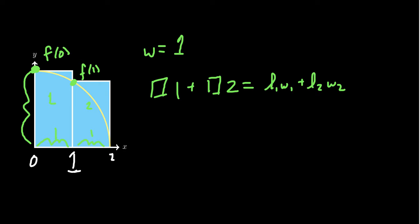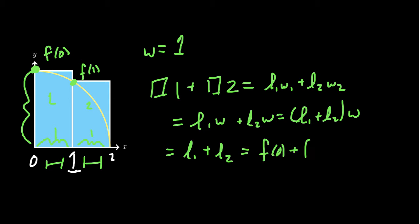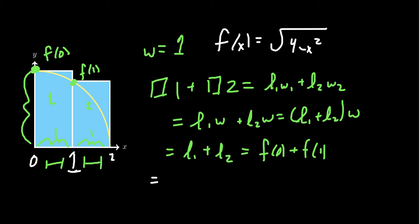Since we chose evenly spaced points, both widths are the same value w. Factoring that out, and since w = 1, we just get f(0) + f(1). Using f(x) = √(4 − x²), f(0) = √4 = 2, and f(1) = √3.